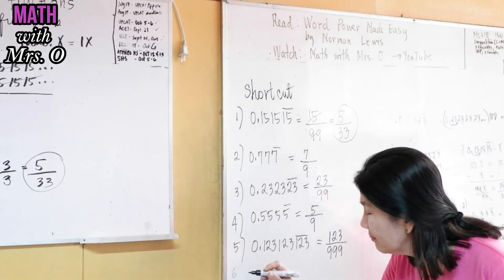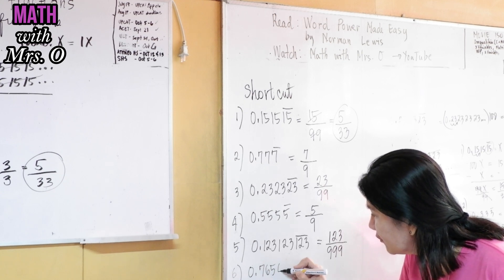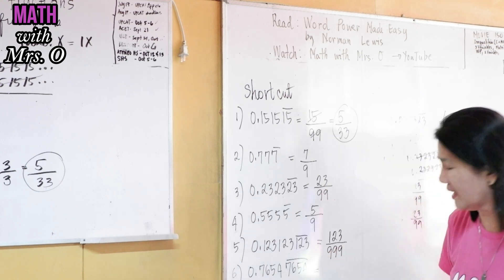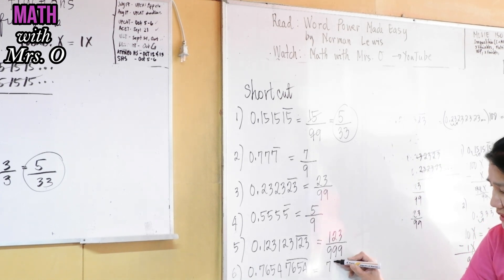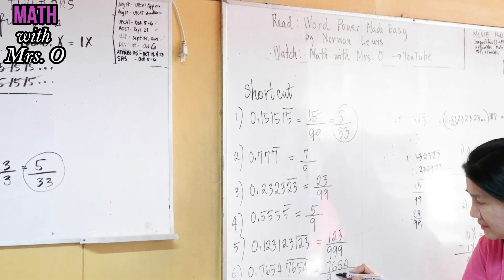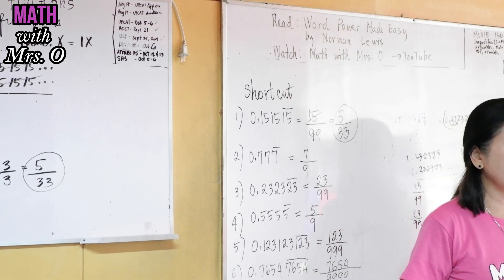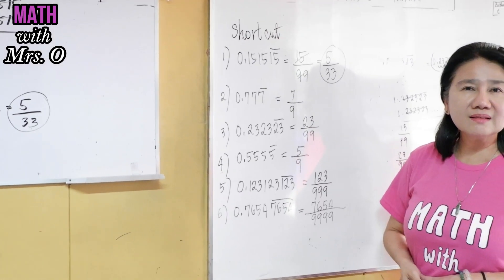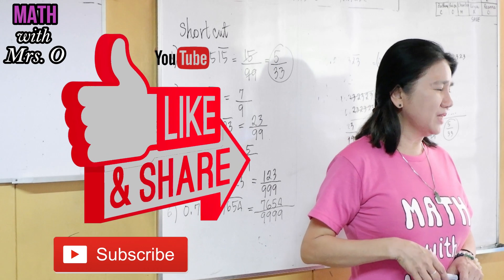I'll give you another example. What if we have 0.76547654 bar? The answer is 7654 over 9999. Very good — that's the shortcut. Always remember: add kindness, subtract judgment, multiply understanding equals Mrs. O's good life.